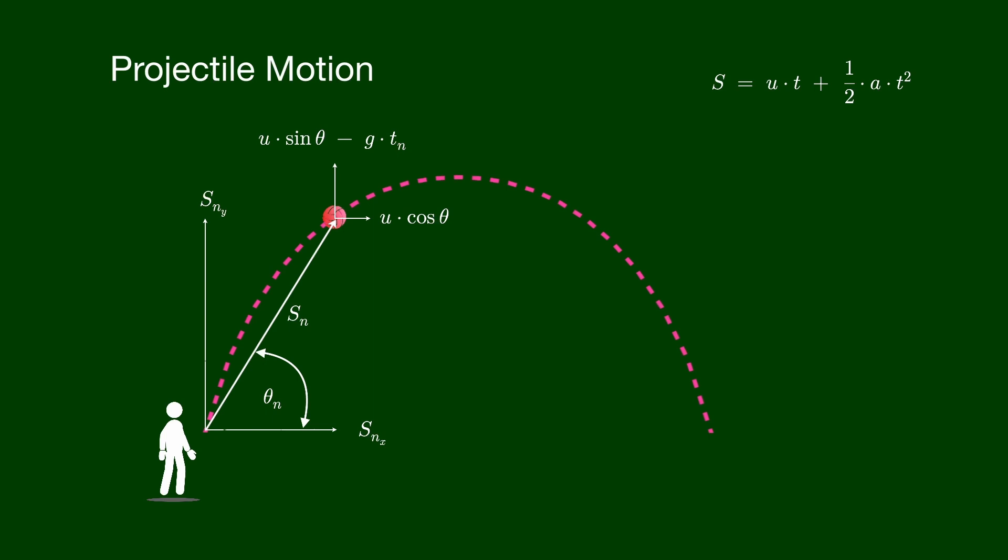Let's find the displacement of the ball at time t_n. We will use this kinematic equation to calculate the displacement. The acceleration in the x direction is zero, giving us an expression for displacement in the x direction. In the y direction, the gravitational acceleration is negative, giving us the expression for displacement in y. The actual displacement is the superposition of the two displacement vectors in the x and y directions.